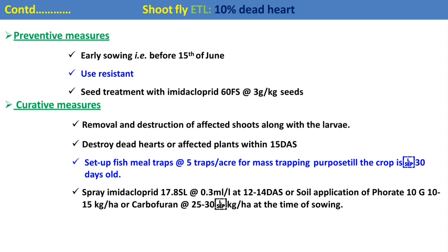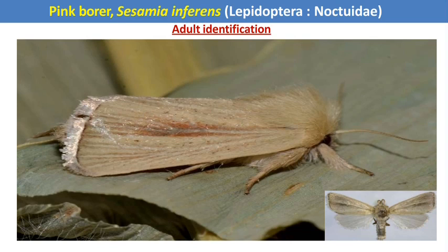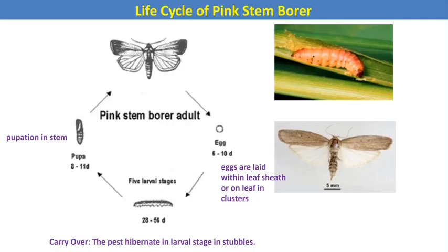The next pest of wheat is the wheat pink stem borer, with scientific name Sesamia inferens. The name itself indicates it is a borer. All cereal borers belong to the order Lepidoptera and have four different life stages: egg, larva, pupa, and adult. In this picture, you can see the adult of the pink stem borer. It is called the pink stem borer because the larval stage is pink in color. The larval stage of Lepidoptera is called a caterpillar, and the caterpillar is the damaging stage.